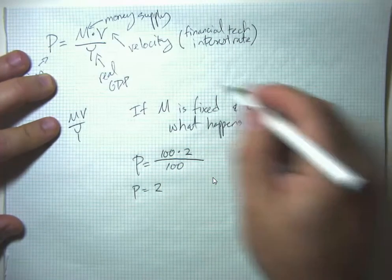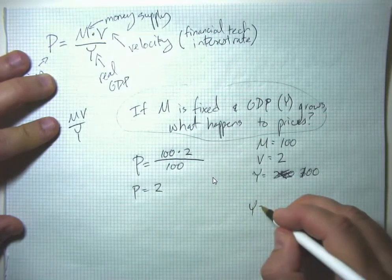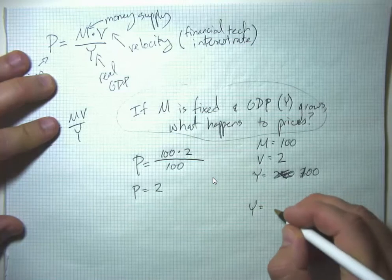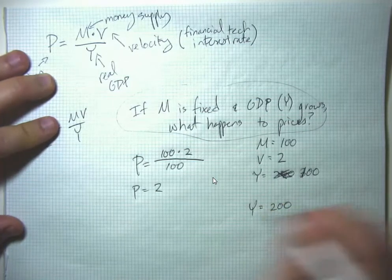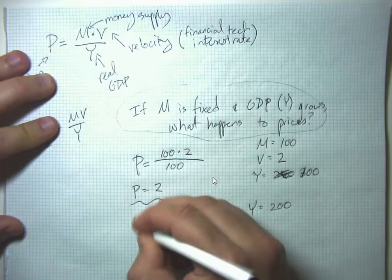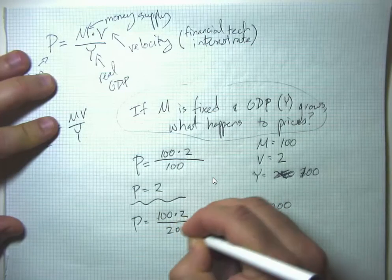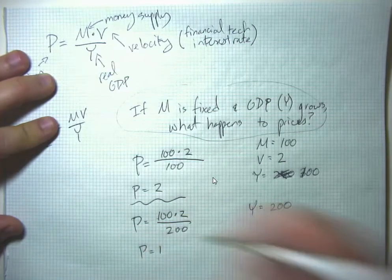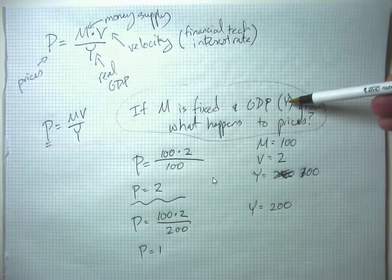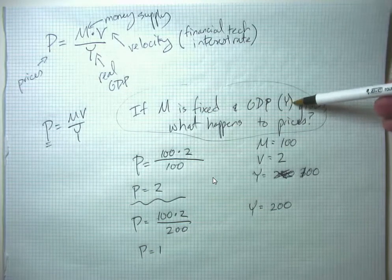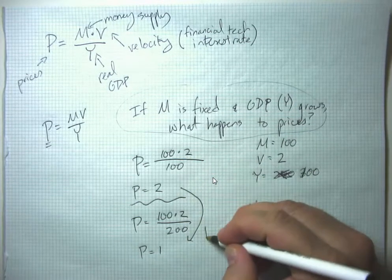Now let's ask, what if we rerun this calculation with GDP of 200? The price level is 100 times 2 over 200, so the price level is 1. Notice that if the money supply is fixed and the real economy is growing, we are going to experience deflation.